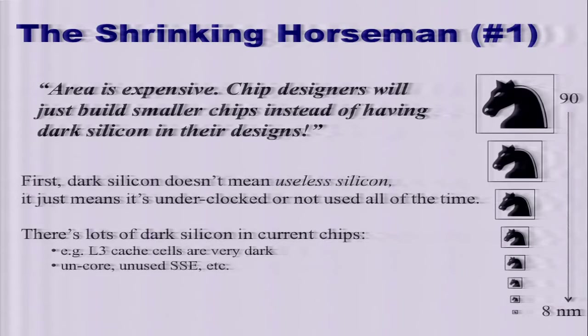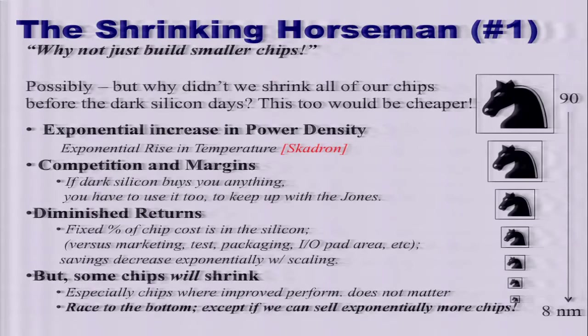One common mistake is thinking dark silicon means the chip ships with parts permanently turned off for its entire lifetime. No — it just means those parts are either underclocked relative to what they could be clocked at, or not used all the time — just some of the time. There's already a lot of dark silicon on current chips: L3 caches are very dark, those transistors do not switch very often, the duty cycle is very low. Dark silicon is fundamentally about low duty cycle.